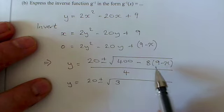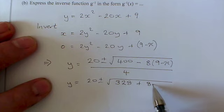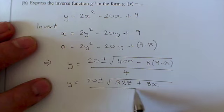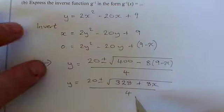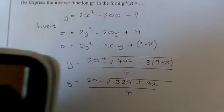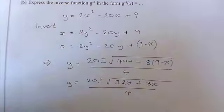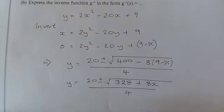Now I suspect I can divide 328 by 8, so I could take out a √8 from that top expression. I'm just checking on my calculator—yes, it equals 41. So I could rewrite this as y = (20 ± √8 × √(41 + x)) / 4.